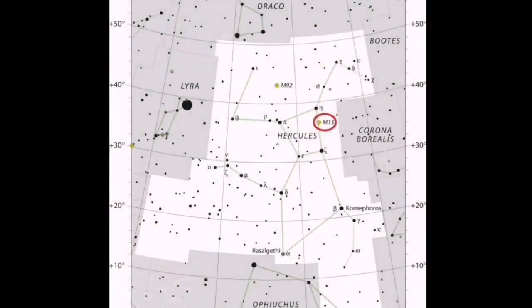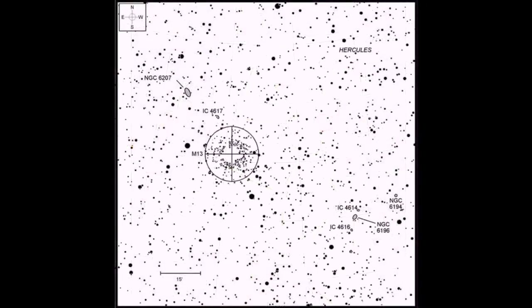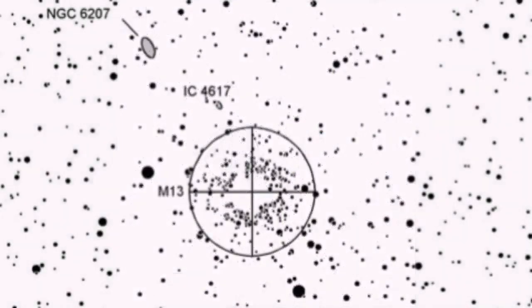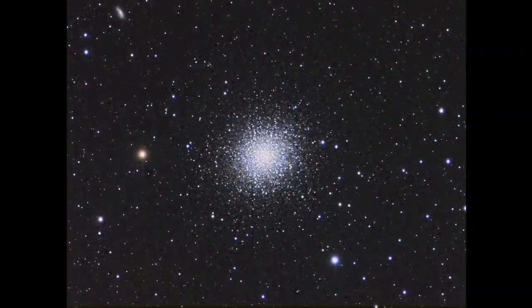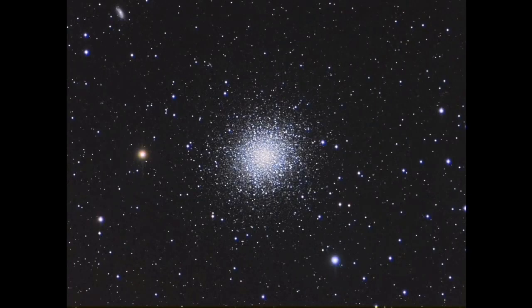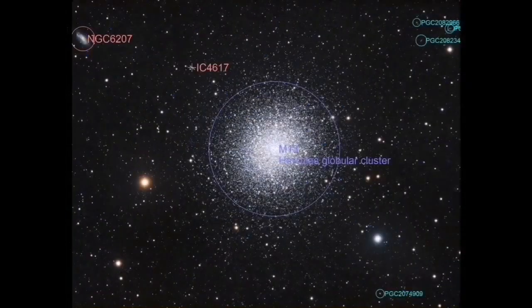This is the finder chart for the constellation of Hercules. And this is also the finder chart for the M13. You can see the NGC 6207 at the top, the two stars in the lower and the left part of the cluster you see. And the target is very easy in that 12-inch telescope.